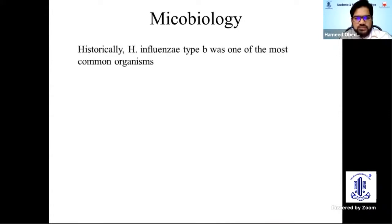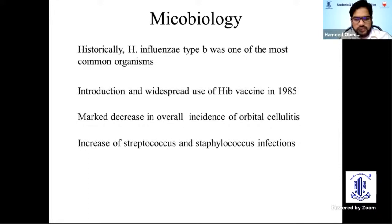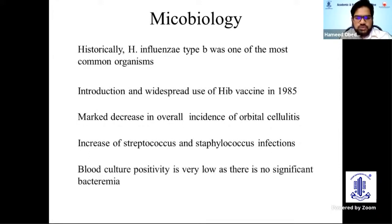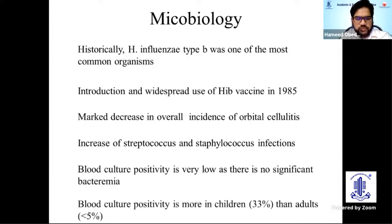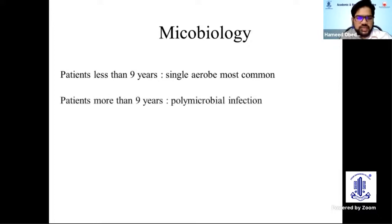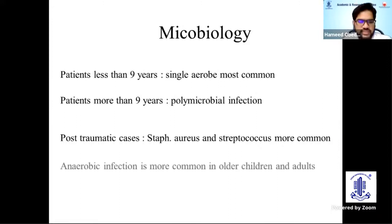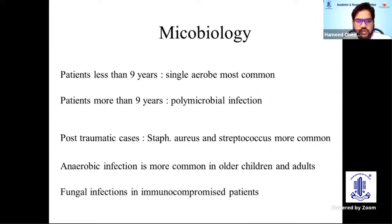Historically, Haemophilus influenzae type B was one of the most common organisms. Since the introduction of the H. influenzae vaccine in 1985, there has been a marked decrease in overall incidence of orbital cellulitis, but an expansion of Streptococcal and Staphylococcal infections. Blood culture positivity is usually very low; more positive in children than adults. Patients less than nine years usually have a single aerobe as the most common organism; above nine years, polymicrobial infection is seen. Post-traumatic orbital cellulitis involves Staph aureus and Streptococcus. Anaerobic infection is more common in older children and adults with trauma history. Fungal infection is more common in immunocompromised patients.